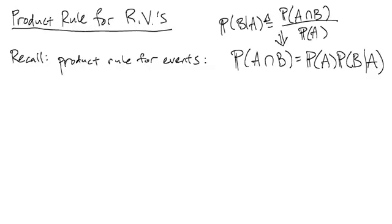In this video, I am going to talk about the product rule for random variables, which is also called the chain rule. The basic idea is that sometimes we want to reason about a joint distribution, but we don't have the joint distribution written out as a table, so we need to assemble it from different pieces. The basic idea is going to be the same as the product rule for events.